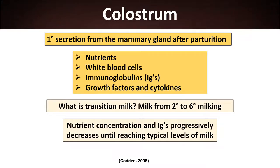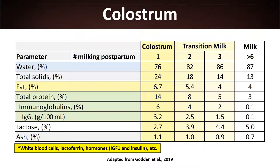Transition milk is defined as the secretion of the mammary gland obtained from the second to the sixth milking. During this period, nutrient concentrations and IgG levels are progressively decreasing until reaching typical commercial milk levels. Not only are IgGs decreasing, but water content is also increasing.